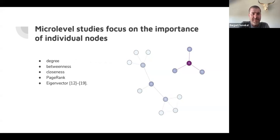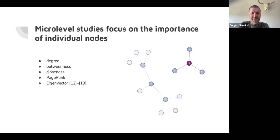Popular ways of determining node importance include degree, betweenness, closeness centrality, PageRank — the original algorithm behind Google — and eigenvector centrality, among others like HITS. These are the most important and popular ways of identifying important nodes, and what they allow us to do is take a large network with 40,000 or 100,000 nodes and identify key role players.